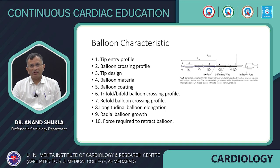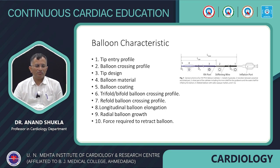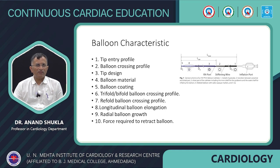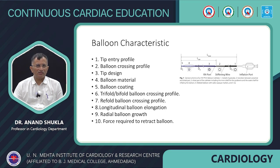Looking at balloon anatomy, there is a hub and distal tip. The key characteristics to look for in a balloon include: tip entry profile, how small the balloon crossing profile is, diameter, tip design — whether tapered or non-tapered — balloon material, whether balloon coating is present, and when the balloon is folded, whether it is tripod or bipod, since tripod requires a smaller crossing profile. Once the balloon has been used, the re-fold crossing profile is also important, as we sometimes reuse balloons to cut down cost. While inflating, one should consider longitudinal balloon elongation, radial balloon growth, diameter increase, and the force required to retract the balloon.